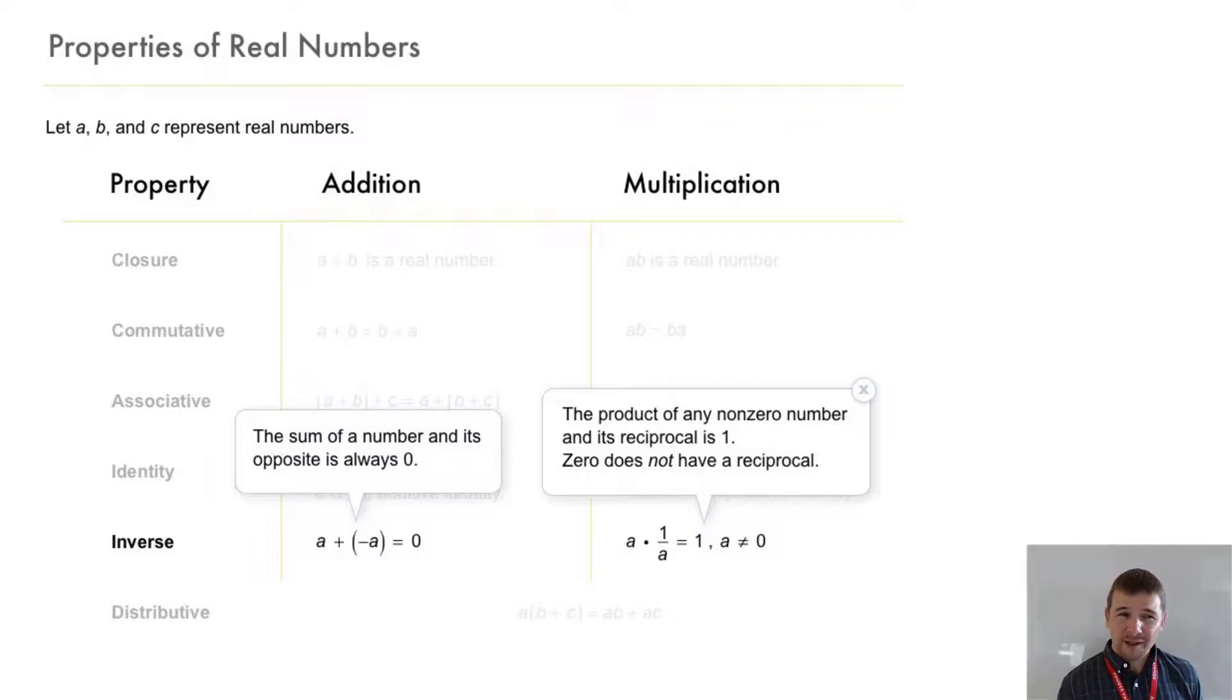The inverse property of addition says that a plus its opposite negative a equals zero. The inverse property of multiplication says a times its inverse one over a equals one and a cannot equal zero. That's because a is a denominator in that expression.